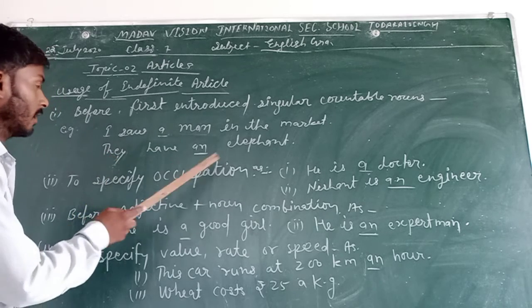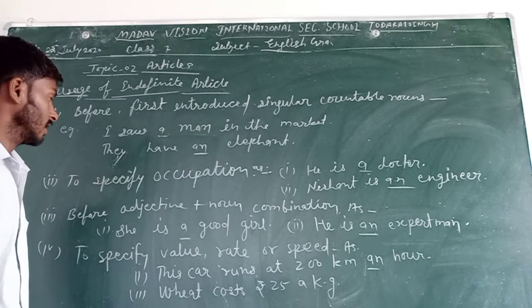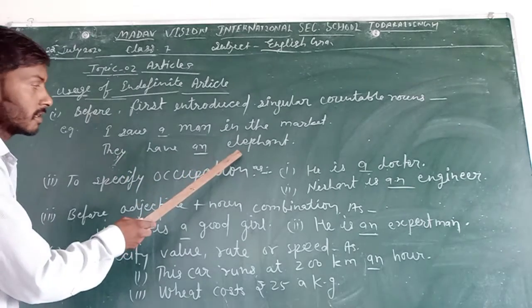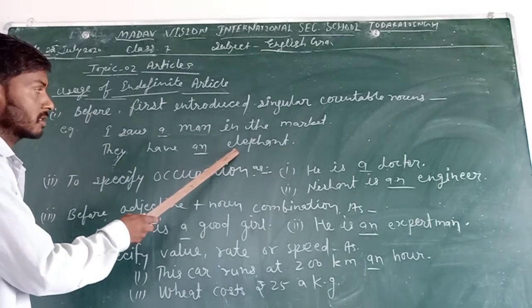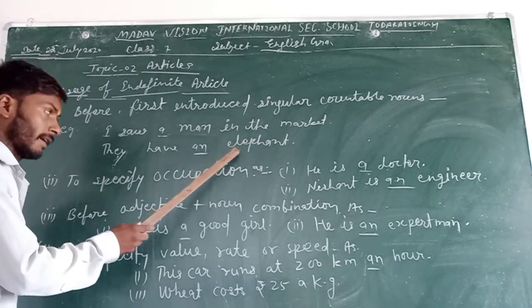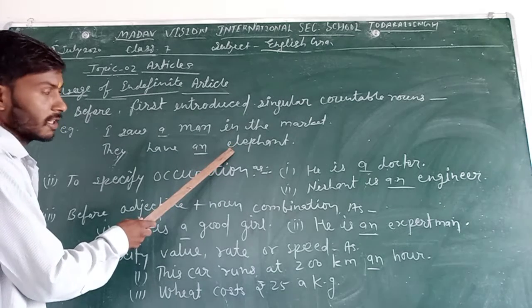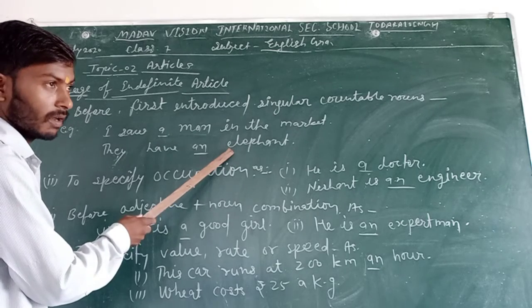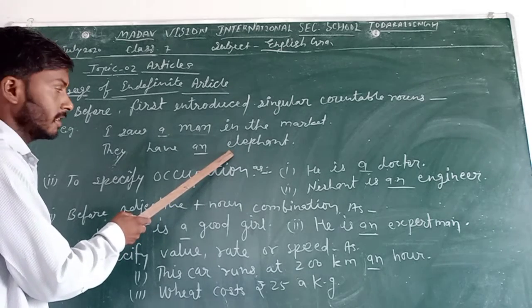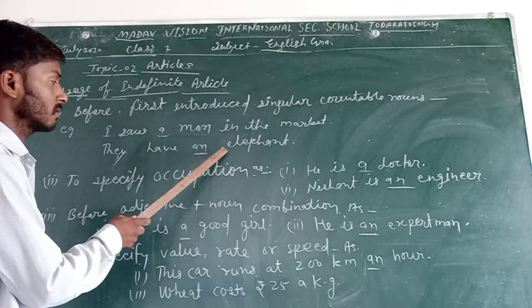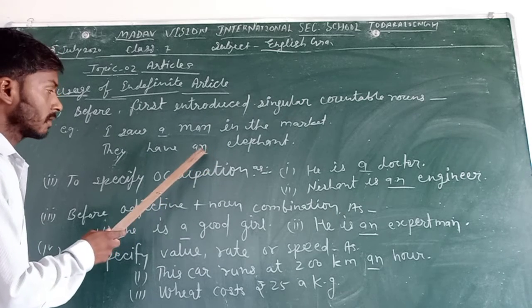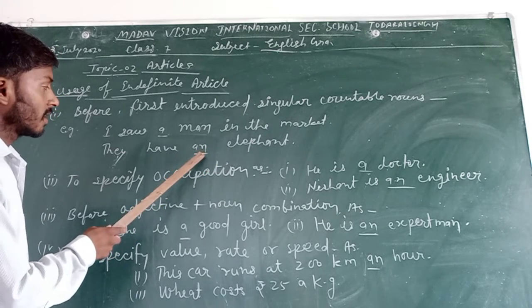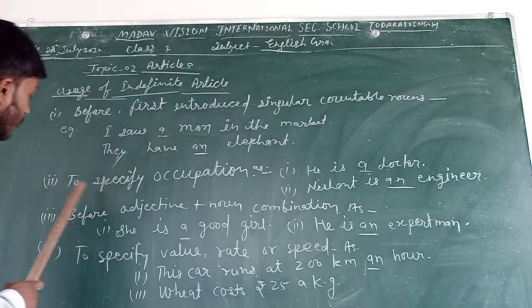They have an artifact. In this sentence, noun first time noun is introduced. And in fact, the first letter of this noun is E, which is vowel. And it is related to vowel, so we will use an.